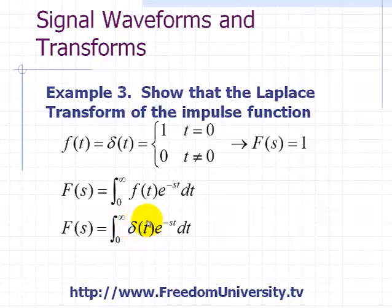And this only occurs at one point. And that's when the argument of this impulse function t is equal to 0. When t is equal to 0, e to the s times 0 in the exponent here becomes 1.